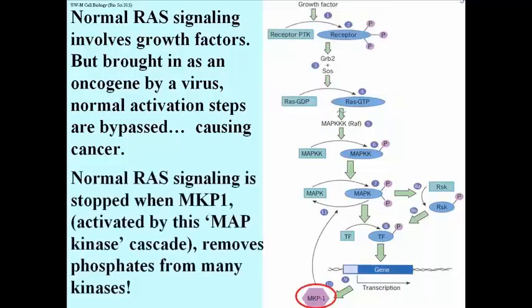One final note: Under normal circumstances, excess RAS activity is controlled by the protein MKP1, which stands for MAP Kinase Phosphatase 1.